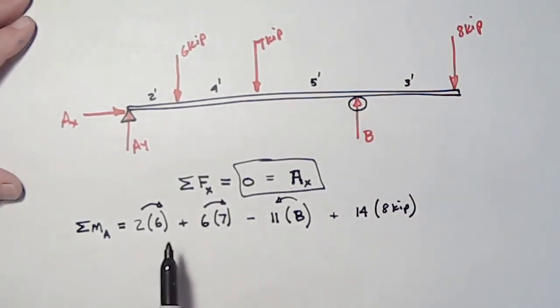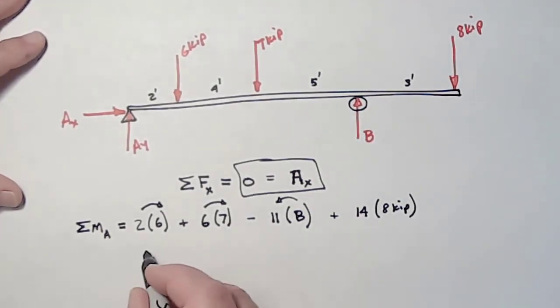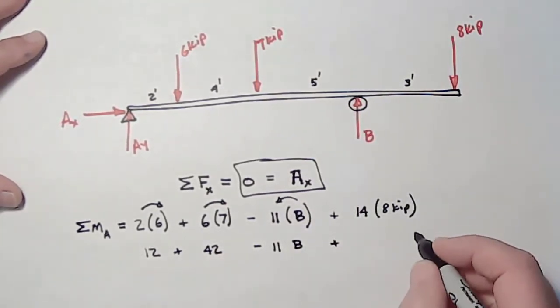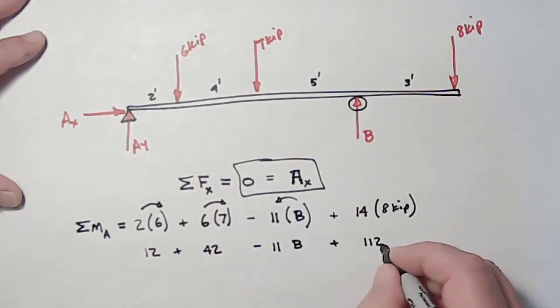Okay. I could write kips everywhere, but B will now be in kips. So, if I sum up all these moments. Two times six is twelve. Six times seven, forty-two. Eleven B minus, plus, plus, 14 times eight is a hundred and twelve. Those all add up to zero. I have one unknown, which is the force at B.